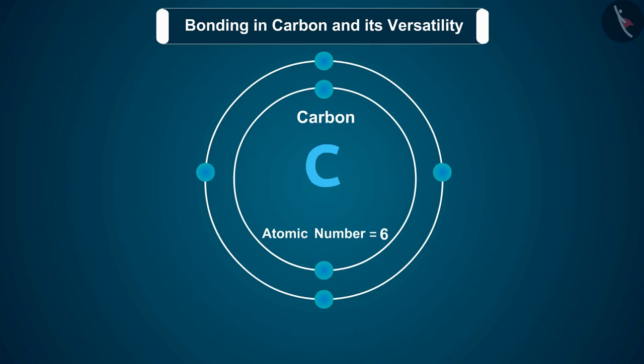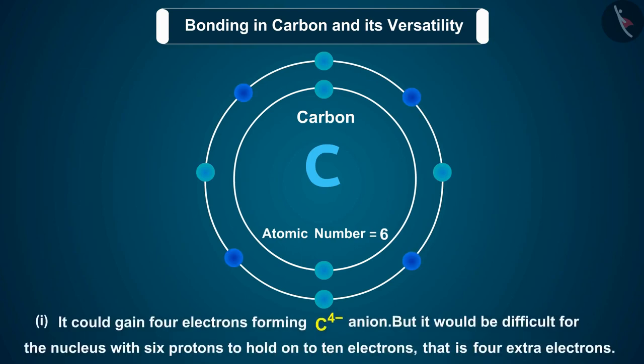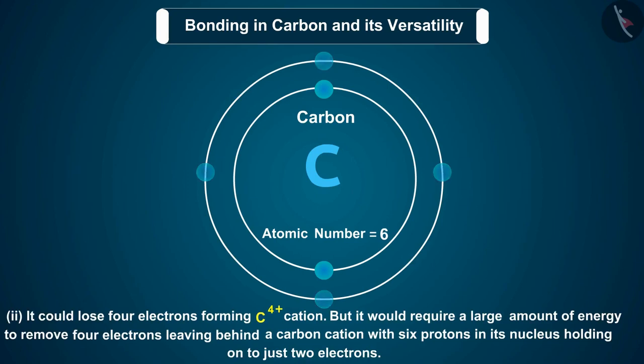Let's assume if it were to gain or lose electrons. It could gain 4 electrons forming C4- anion, but it would be difficult for the nucleus with 6 protons to hold on to 10 electrons, that is 4 extra electrons. It could lose 4 electrons forming C4+ cation, but it would require a large amount of energy to remove 4 electrons leaving behind a carbon cation with 6 protons in its nucleus holding on to just 2 electrons.